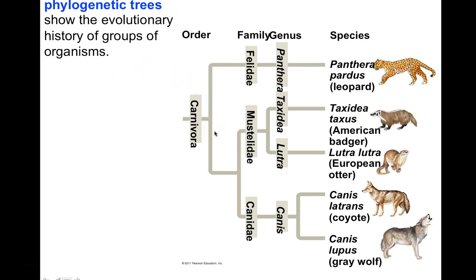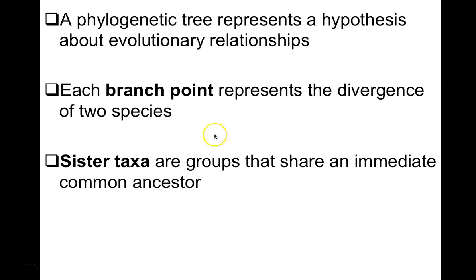A phylogenetic tree represents a hypothesis about evolutionary relationships — this is not solid, fixed science. When I studied entomology, groups had already been moved into different categories. Scientists continually update phylogenies as they gather more information, joining or removing groups. Each branch point represents the divergence of two species and the ancestor of the two groups that come after that branch point.